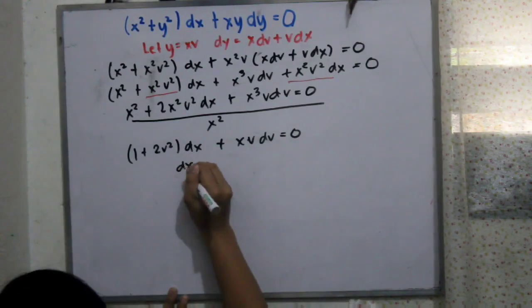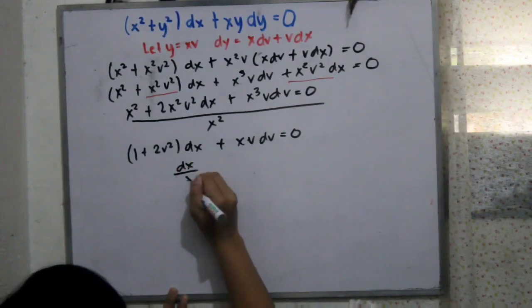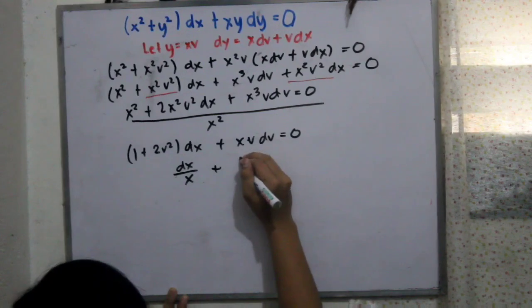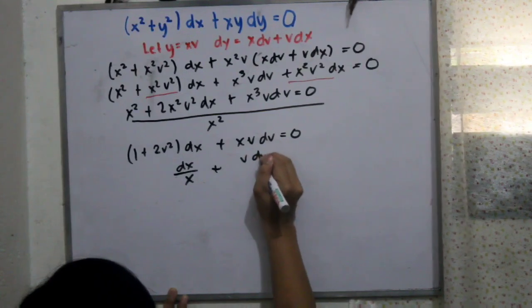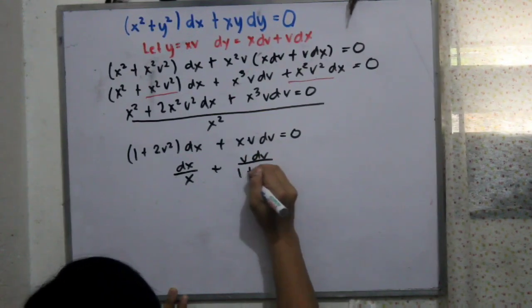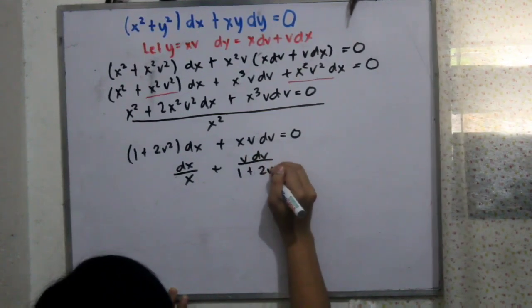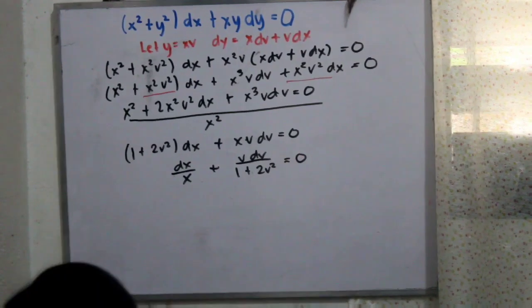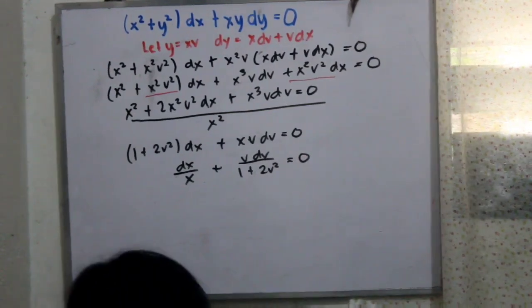Manipulating, we will have dx over x plus v dv all over 1 plus 2v squared equals zero.